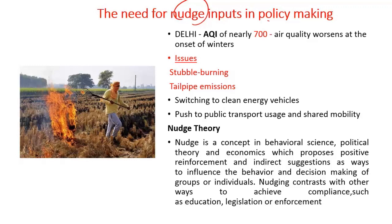With the onset of winter and arrival of Diwali, Delhi has gone into its precarious pollution problem. The air quality index of Delhi indicates a score of 700, which indicates the gravity of the problem surrounding Delhi. The worsened air quality is mainly attributed to stubble burning and tailpipe emissions.